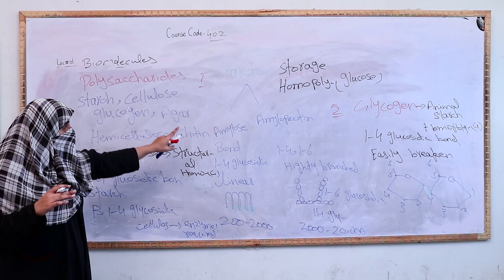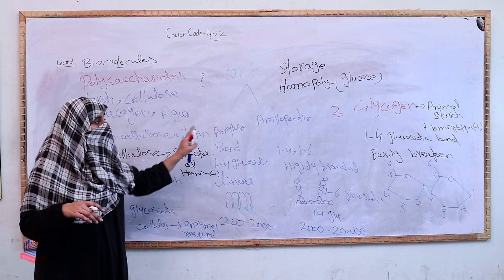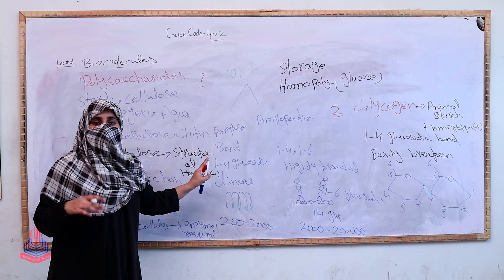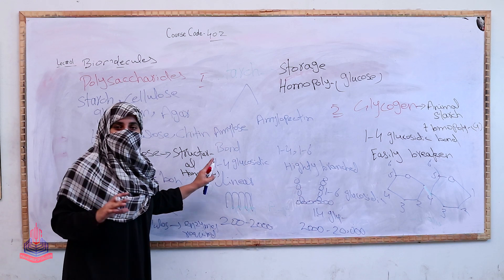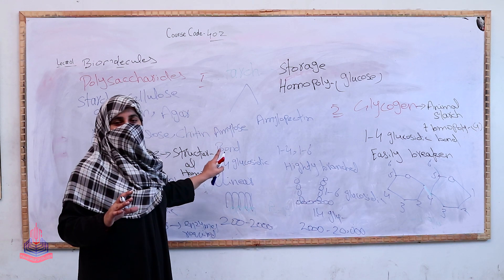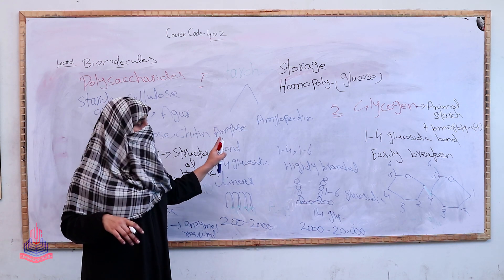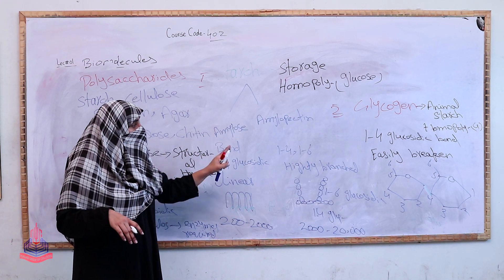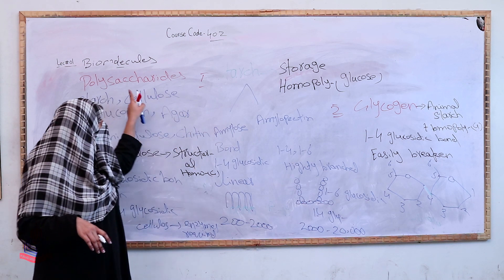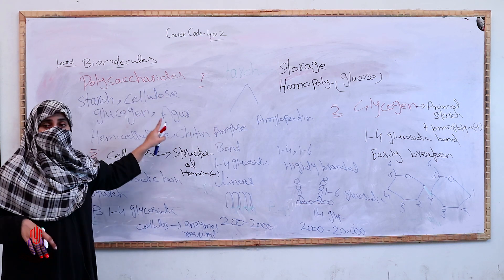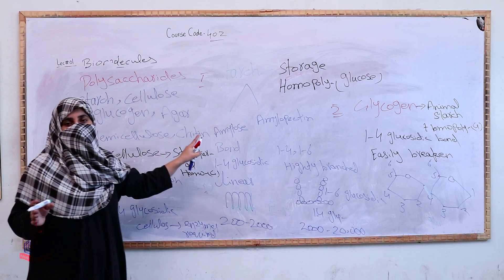Today we have discussed polysaccharides: starch, glycogen, and cellulose. We will discuss hemicellulose, agar, and chitin in the next class. If anyone has questions, you can ask in the comments.